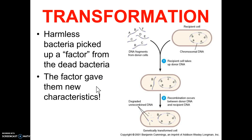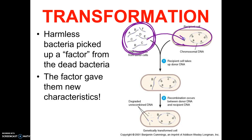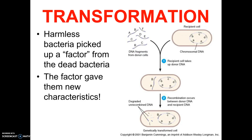In essence, what happened is that DNA fragments coded for making the smooth coating, and when the living bacteria absorbed that DNA, they now had the instructions to make a smooth coat and were transformed. It's sort of like if you could swallow some DNA and your eye color changed. Griffith just knew it was some kind of factor; he didn't know it was DNA causing this.